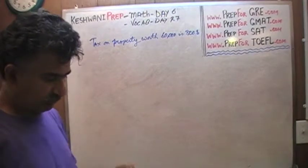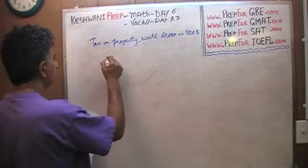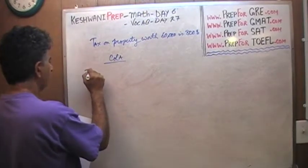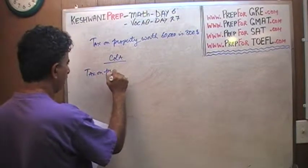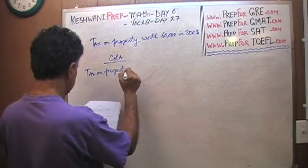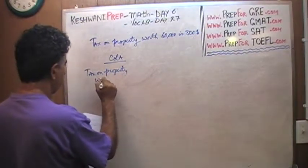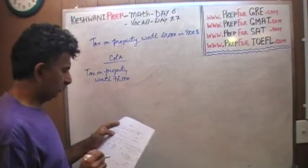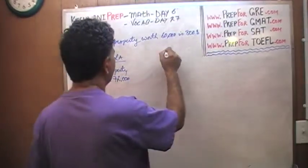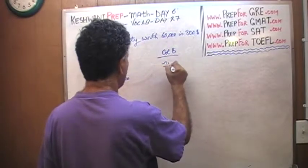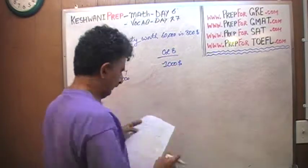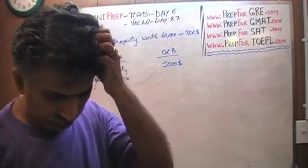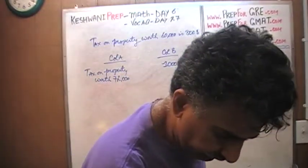We are told that the property tax on property worth $60,000 is $800. And what we are asked to compare are these two quantities. The property tax on property worth $72,000 versus column B $1,000. That's all it is. We simply have to figure out if the two quantities are equal or if one is greater than the other.